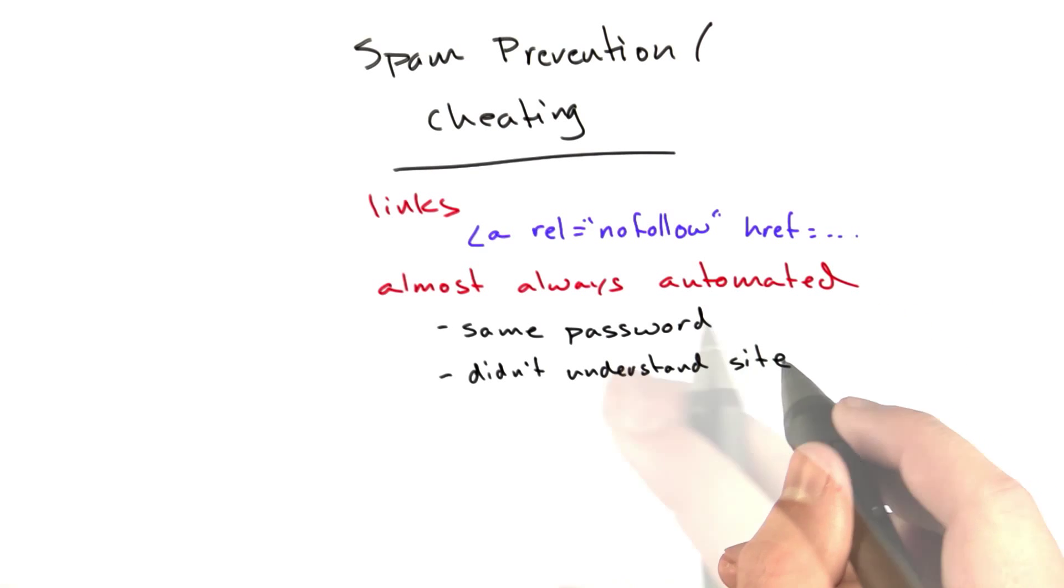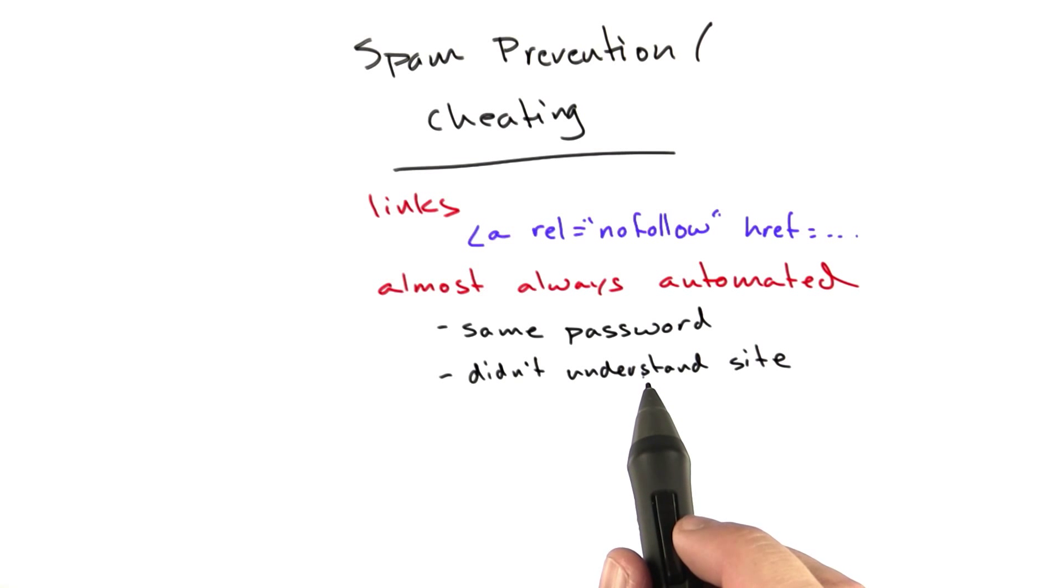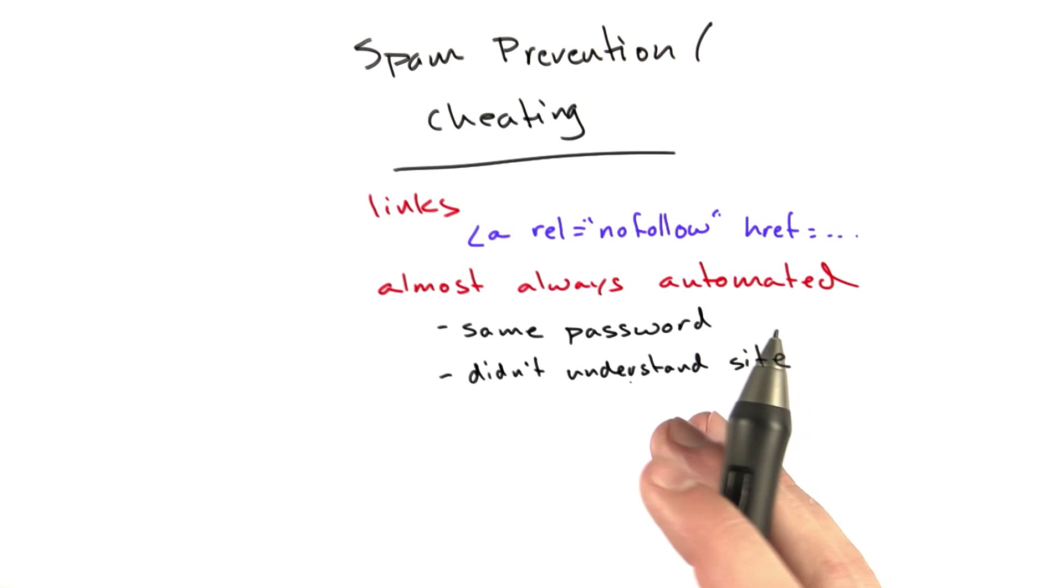Spammers on a community site that behaves differently from other sites online, noticing that these people used the site in weird ways was enough to catch most spam. We didn't have to do any fancy like look for Viagra or look for suspicious-looking links. A lot of these behavioral heuristics worked really well.